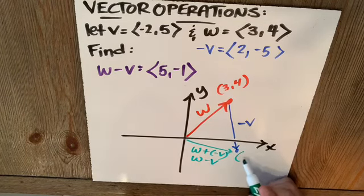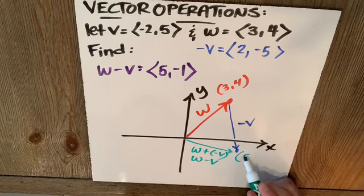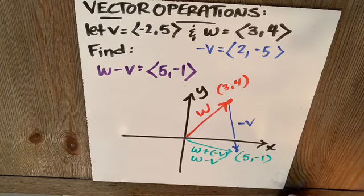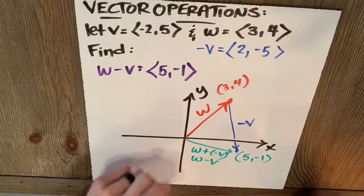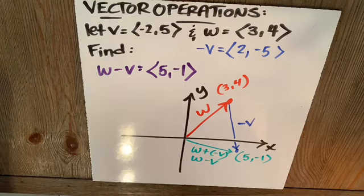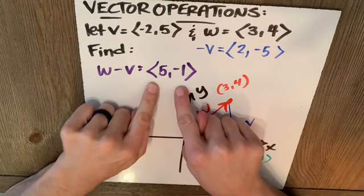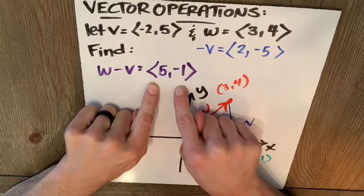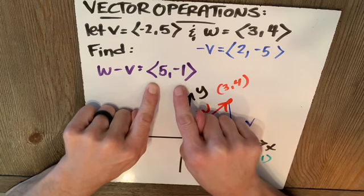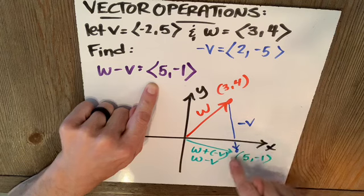Notice that the point we end up at is 5, negative 1. Why is that? Because we started everything here at the origin. So we're in standard position. The resultant vector W minus V is over 5, down 1, over 5, down 1.